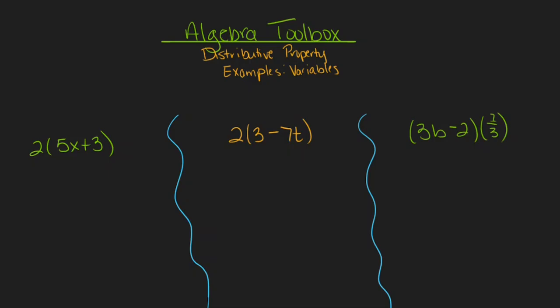First, let's consider the expression 2 times the quantity 5x plus 3. Because I see this 2 on the outside of the parentheses, and there's nothing I can do to combine the values inside the parentheses because they're not like terms, one thing I can do to eliminate those parentheses is distribute the 2 into both parts of the expression inside the parentheses.